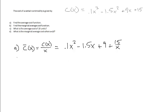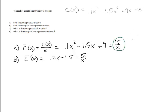In part b, we find the marginal average cost, meaning we take the derivative of the average cost function. So c̄'(x) = 0.2x - 1.5 - 15/x². For that last term, think of 15/x as 15x⁻¹ to use the power rule — multiply down the negative 1 giving us negative 15, and x to the negative 2, which moves to the denominator as positive x².